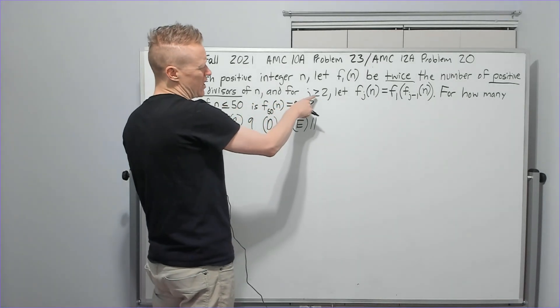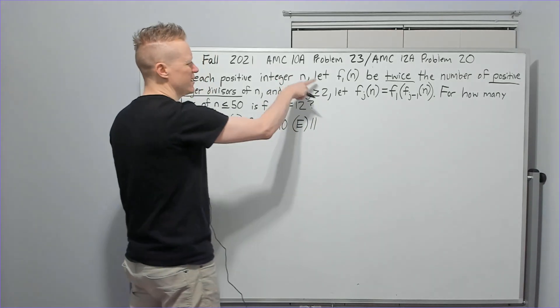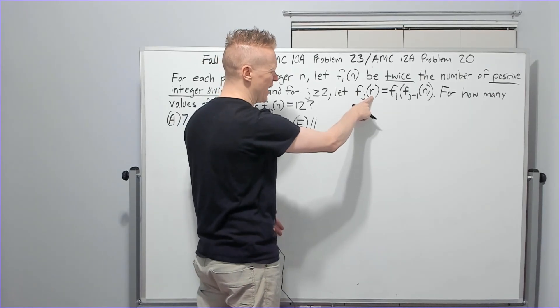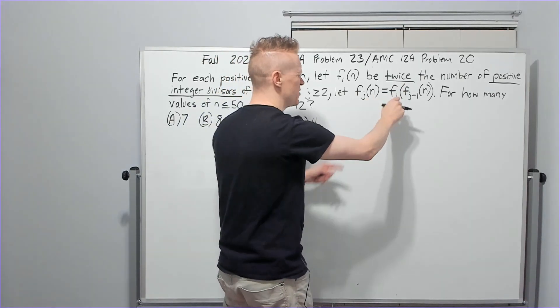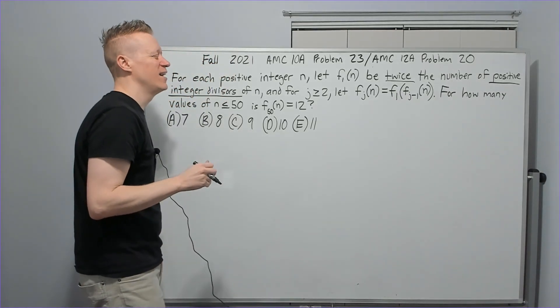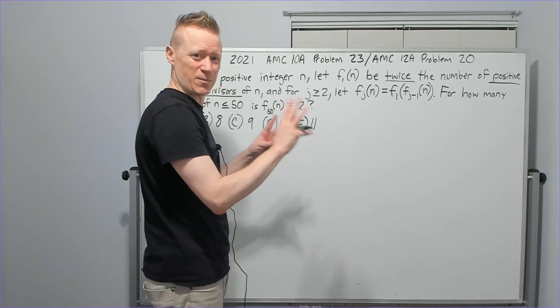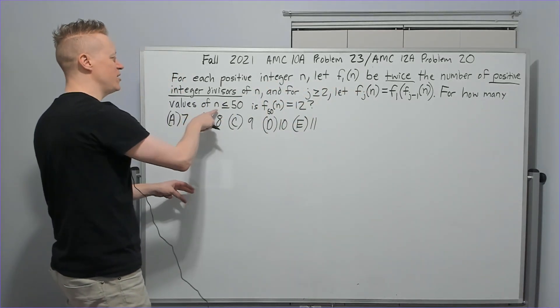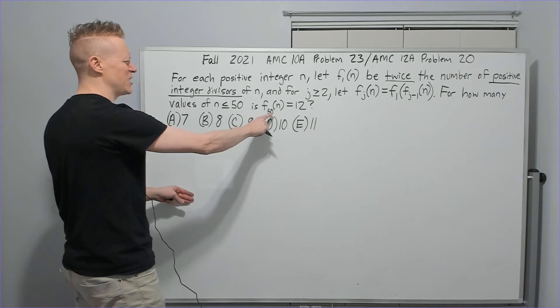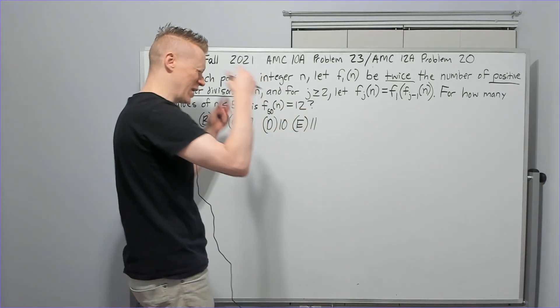And for j greater than or equal to 2, wait, where did the j, why? Okay, I guess keep going. Let f sub j of n equal f sub 1 of f sub j minus 1 of n. What? What? What? What are they? Okay, well, we're just going to press on. For how many values of n less than or equal to 50 is f sub 50 of n equal to 12?